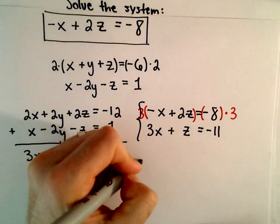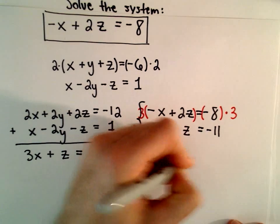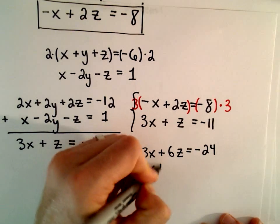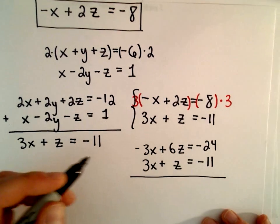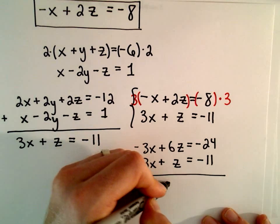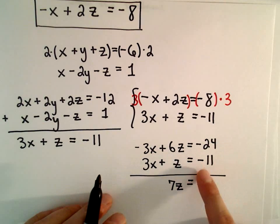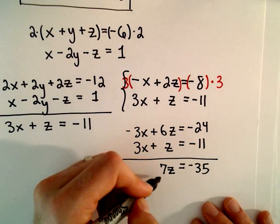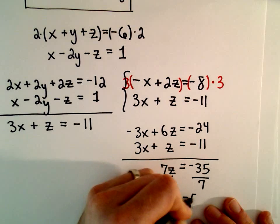Multiplying gives us negative 3x plus 6z equals negative 24. We still have 3x plus z equals negative eleven. Adding those two equations together, the x's cancel, 6z plus 1z will be 7z, and negative 24 plus negative eleven will be negative 35. Dividing both sides by 7, we get z equals negative 5.